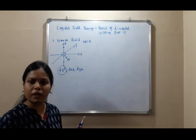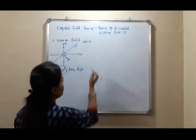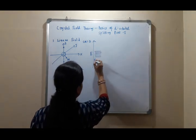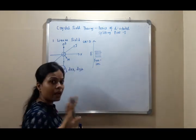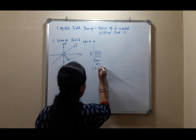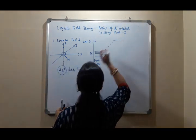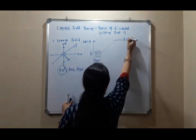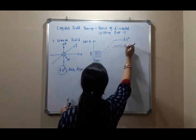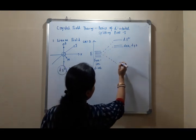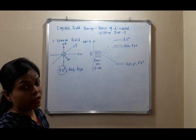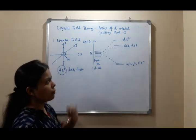Obviously there is no need to memorize the splitting pattern — we can easily draw it by applying this concept. If this is my energy scale, this is my d orbital in the free ion, meaning when there is no external field and the ligands are at infinite separation. In the presence of the ligand field, dz² will be maximum destabilized, followed by dxz and dyz which also contain the z-component. And the other two orbitals — dx²-y² and dxy — will be stabilized in order to maintain the barycenter rule. This is the splitting pattern of the linear field.